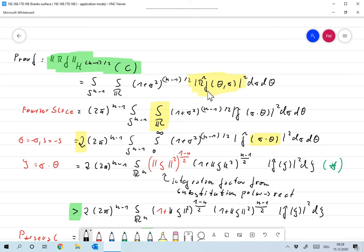Now, of course, here we have Rf hat of theta and sigma, and as usual we apply Fourier slice. So this is 2 pi to the (n-1), which I get over here, integral over S^(n-1), integral over R, and here's just Fourier slice. That's just Fourier slice, right? So I plug this in and nothing else changed.